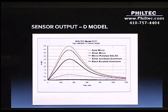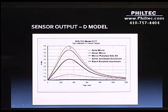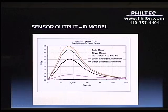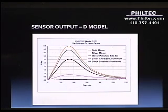If we look at the output of the D model sensors, you can see when we scale the output so the gold mirror achieves full scale or 100% output, there's a very large variation in the output of the D model sensor. With the black target, there's nearly a 100% reduction in the amplitude of the output. So there's a very strong sensitivity to the reflectance of the target surfaces, and hence we refer to these models as D models or reflectance dependent sensors.